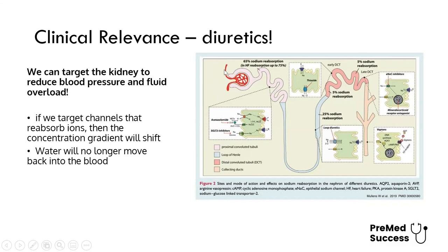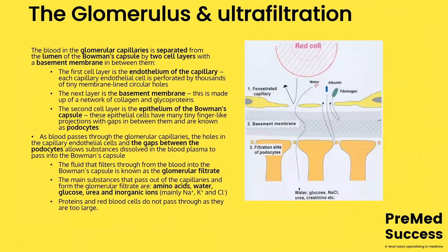If blood pressure is too high, the glomerular cells die and you lose the filtration barrier — the basement membrane is damaged and protein leaks into the urine. We monitor an albumin-creatinine ratio: if albumin is being lost in the urine that indicates significant kidney damage. This is how we stage kidney disease in diabetes.